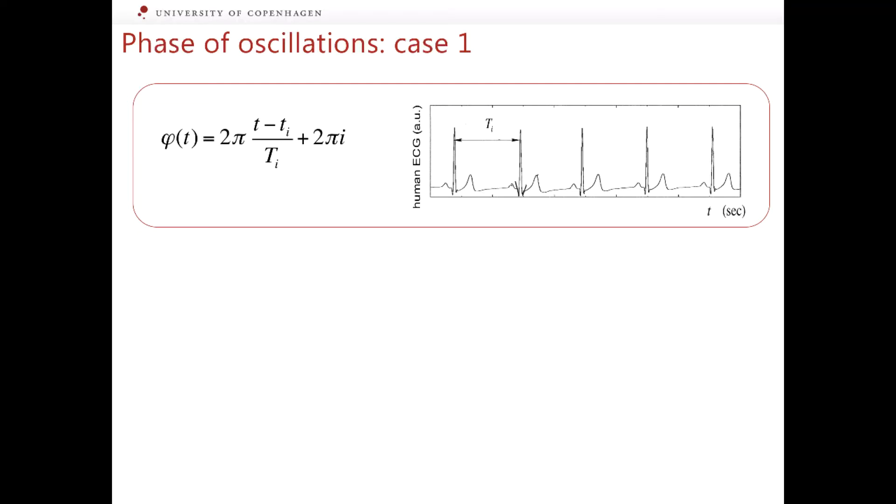We can assume that within an interval between the two consecutive R peaks, the phase grows by 2π, and it should be growing monotonously. How exactly it grows depends on how we define it. For simplicity, let us assume that the phase grows linearly. A formula expressing how the phase φ depends on time is given to the left of the ECG.